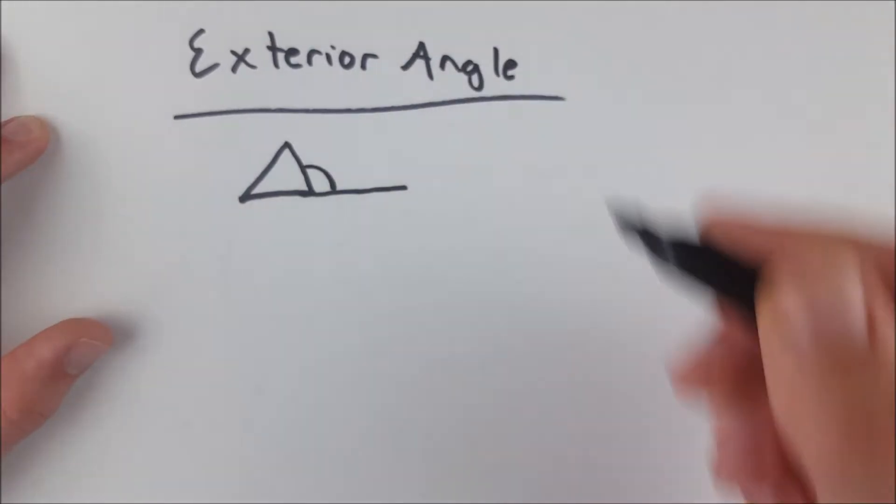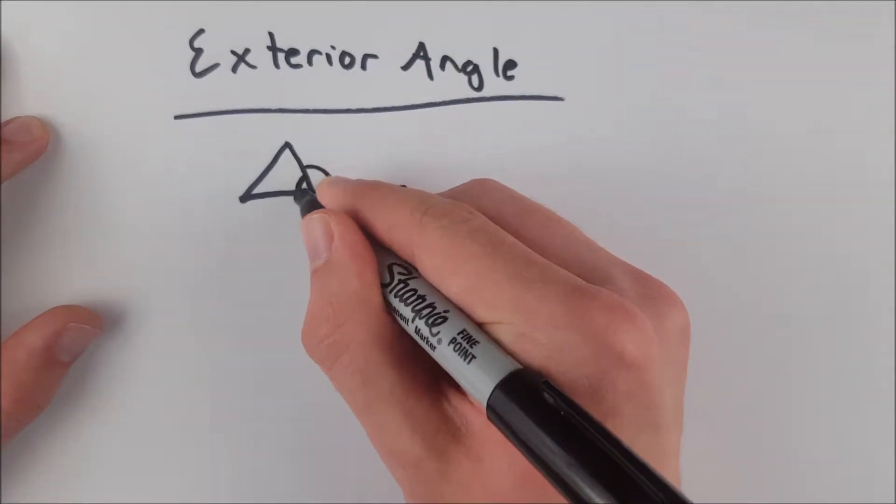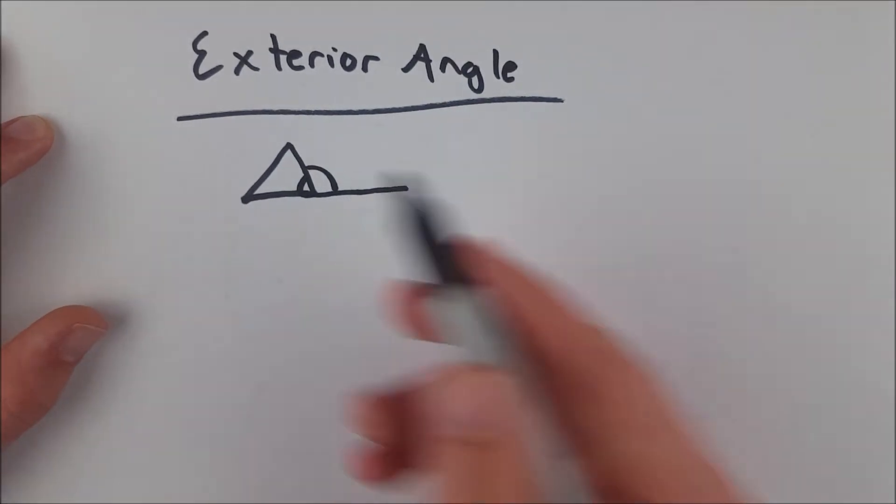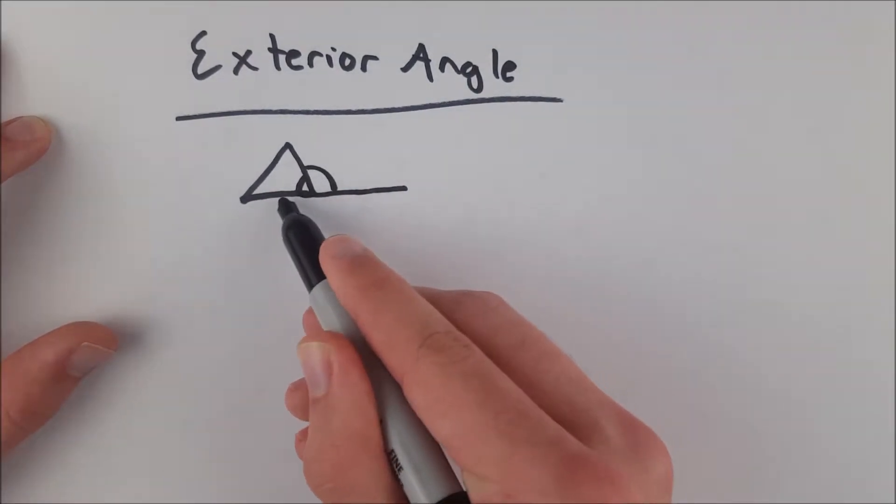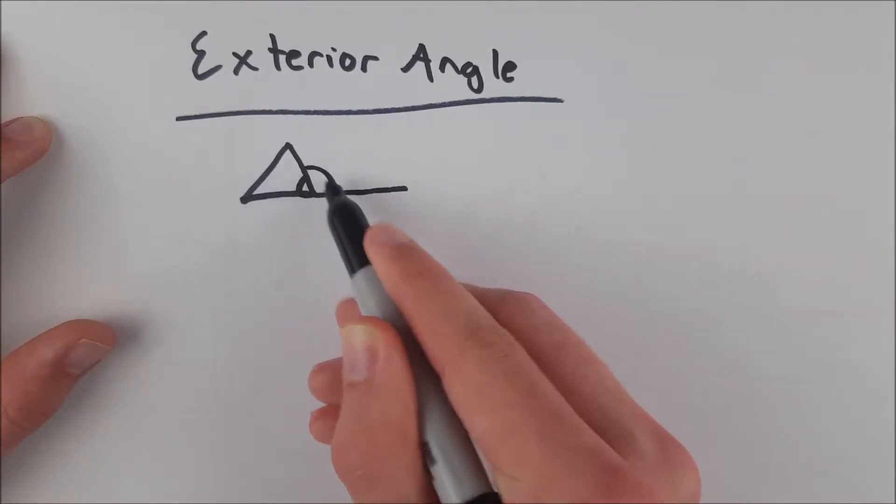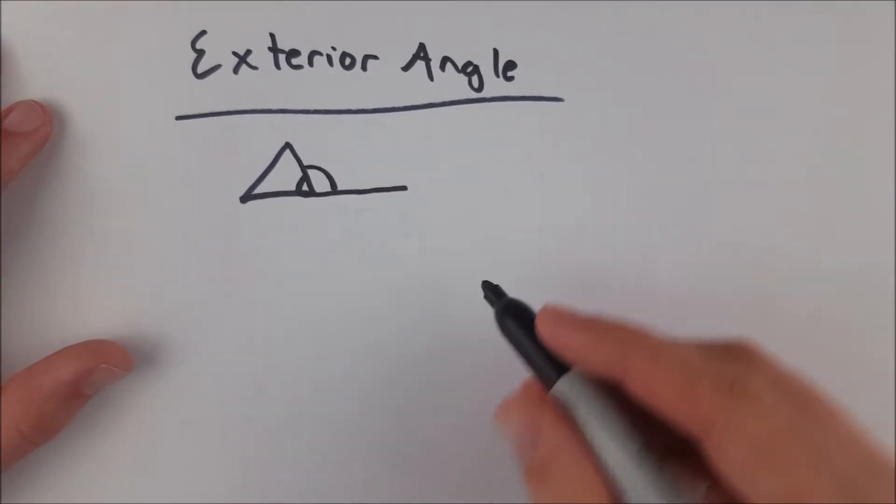So here is our exterior angle, and this is its corresponding interior angle. They form a linear pair, so they form together a 180 degree angle, which makes sense. They form a line, because you're extending it just like that to make a line. So that is how you create an exterior angle.